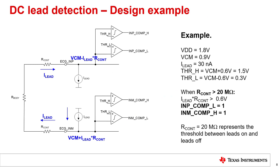Let us look at a design example that illustrates the choices of comparator thresholds and lead detection currents, and the implications of these choices on the threshold of contact impedance between a leads-on and leads-off condition. We take a case where the supply voltage VDD is 1.8 volts. VCM, the target voltage of the input common mode voltage for the RLD loop, is assumed to be VDD/2, which is 0.9 volts. We consider current source-based lead biasing for this design example and assume a lead bias current of 30 nanoamperes. To illustrate both high and low side, we assume a sink lead bias current on the INP side and a source lead bias current on the INM side. The high and low threshold voltages for the comparators are set to 1.5 volts and 0.3 volts, respectively. It is important to choose these threshold voltages outside the normal operating range of the ECG signal chain to avoid a false detection of leads-off condition.